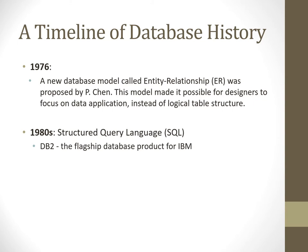Sometime in 1976, a new database model called the entity-relationship model was proposed by P. Chen. This model made it possible for designers to focus on the data application instead of the logical table structure — emphasizing the data itself and the movement of data across the entire information system.